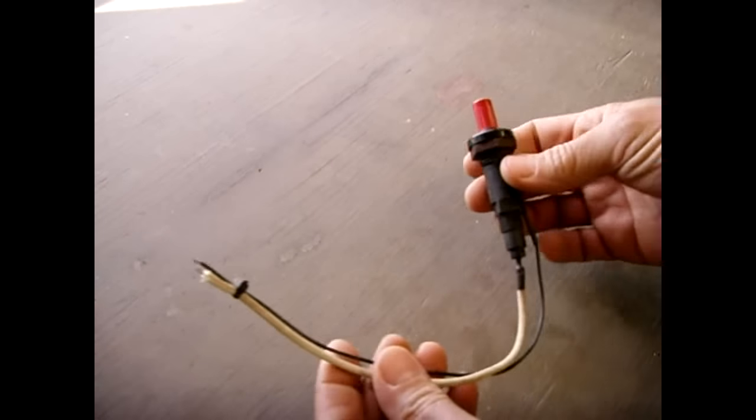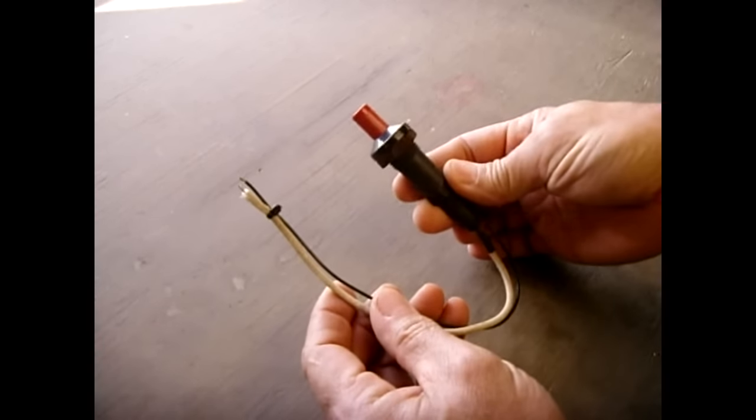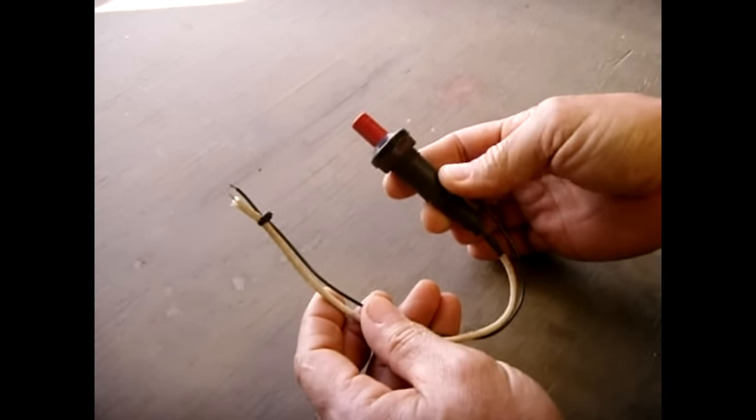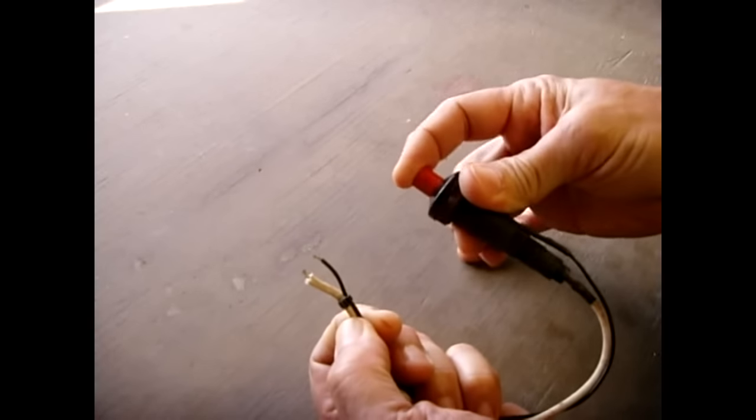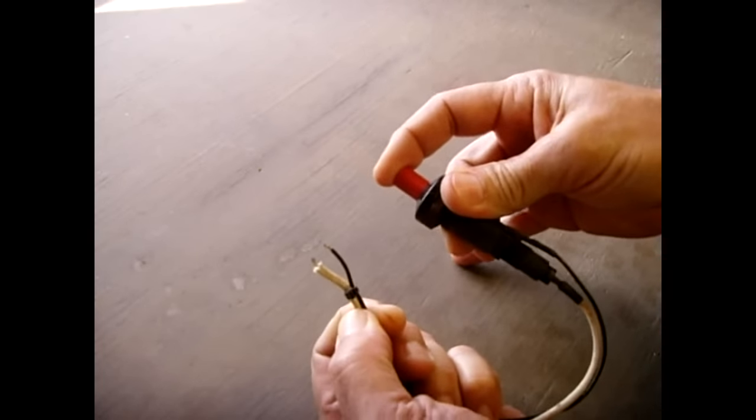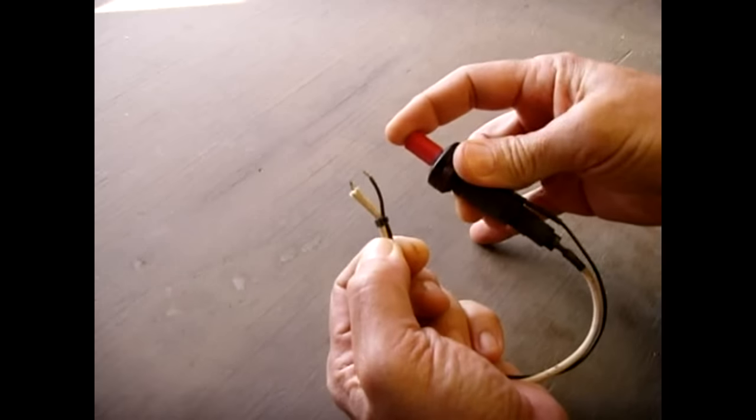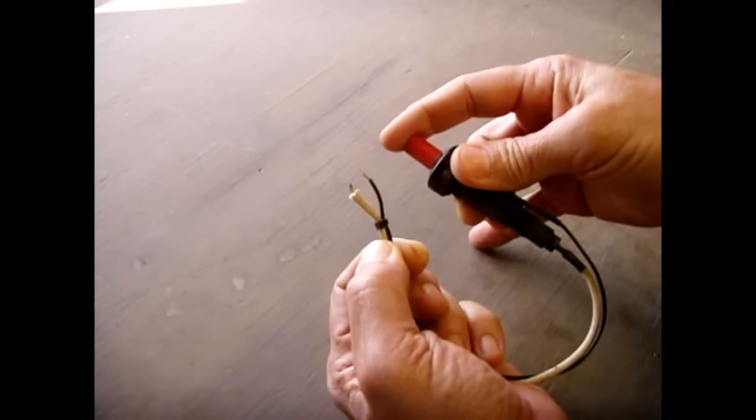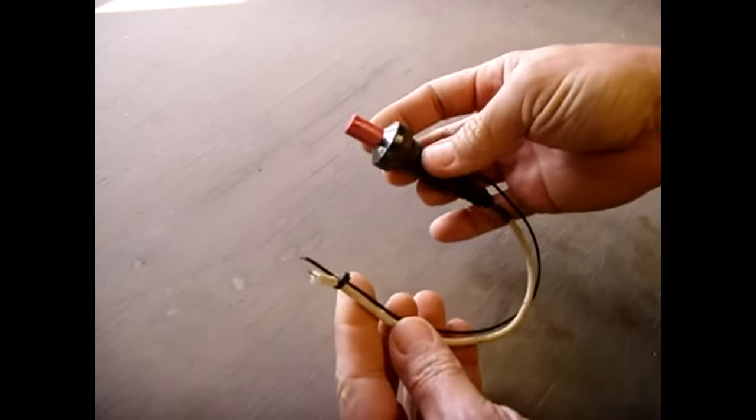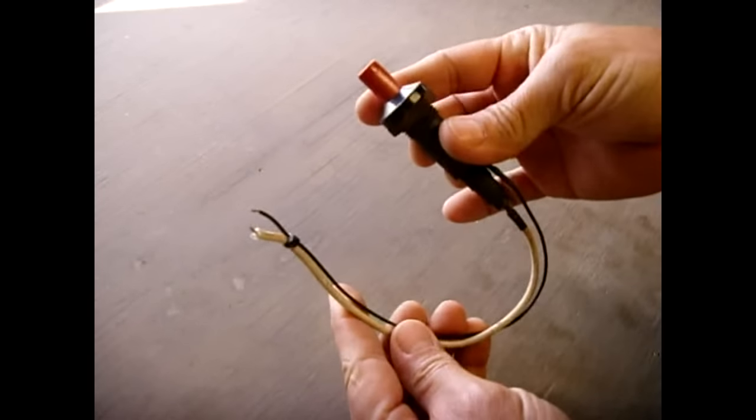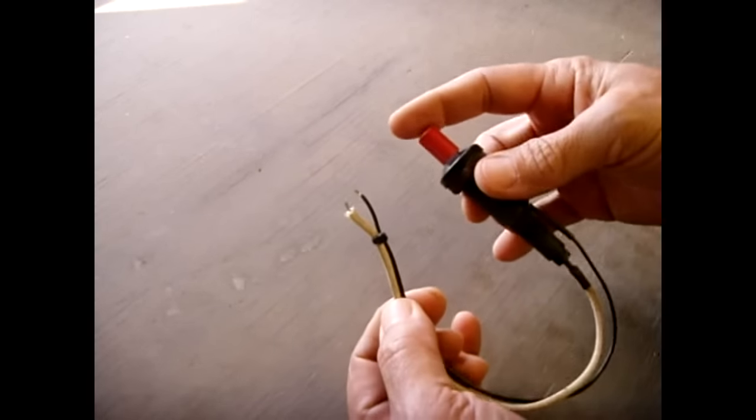I also came across an old barbecue grill. This is the piezo electric starter, the electronic ignition. When you push that, you can see it jump. See that? This works well. I could use this for projects to ignite gases or other things. It's very interesting because I could also show you the amount of current that you get out of this is a few milliamps, even though it's very high voltage.